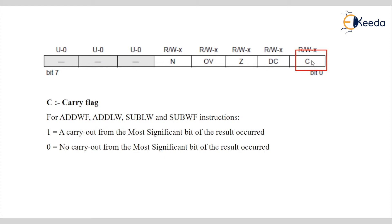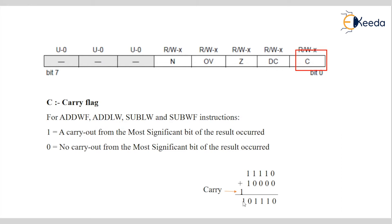When a carry is generated, this bit goes high — that means the flag is set. Here is an example of addition: 0 plus 0 is 0, 1 plus 0 is 1, 1 plus 0 is 1, 1 plus 0 is 1, and 1 plus 1 is 0 with carry 1. This will set the Carry flag. This set bit will be used for further arithmetic operations and the result will be stored in a memory location.